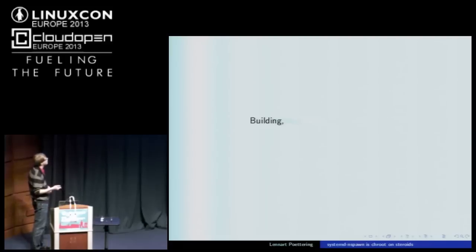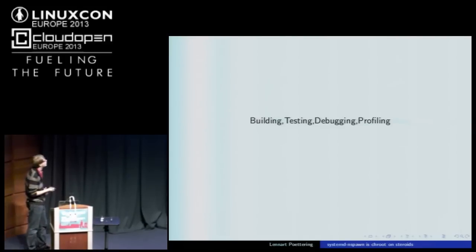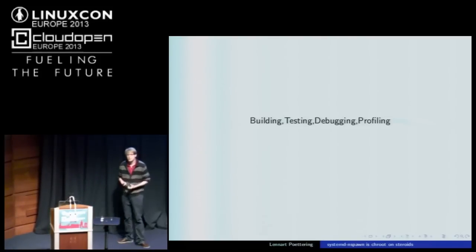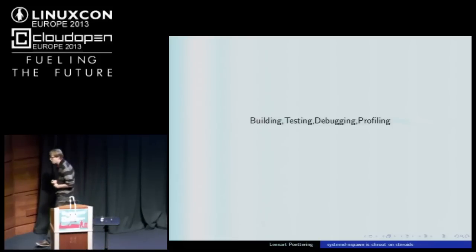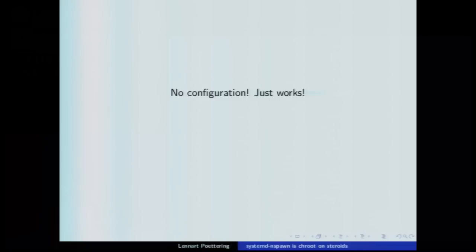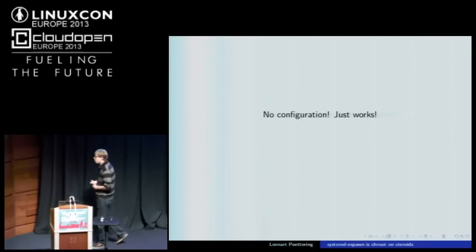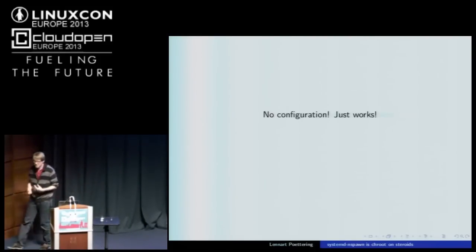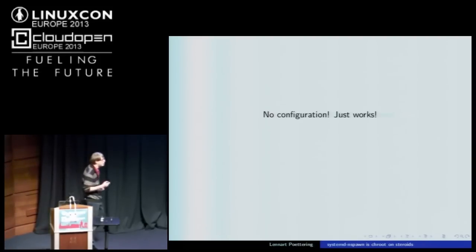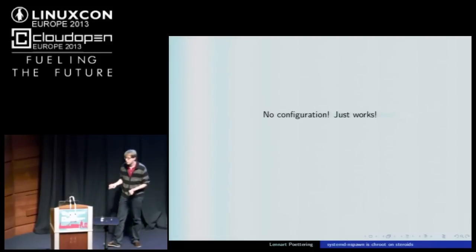Again, it's not about shipping something on your server or using it in production. It's about building stuff, testing stuff, debugging stuff, and profiling stuff. There are actually a couple of distributions which nowadays use it for setting up build environments for packages — you can set up your container and boot it and it will just work. The entire deal of systemd-nspawn is that there is no configuration, the same way as there is no configuration for chroot. You just invoke it with the directory, and it works.